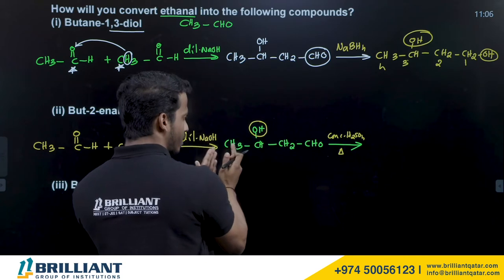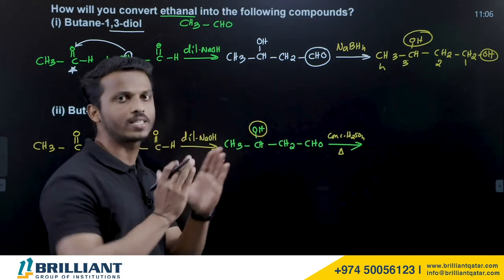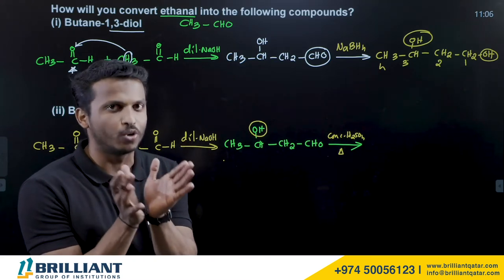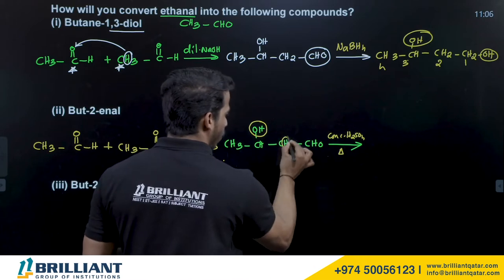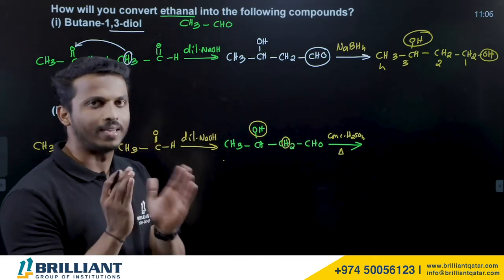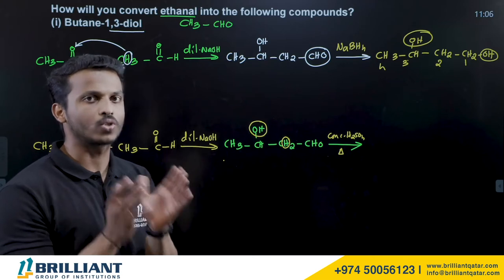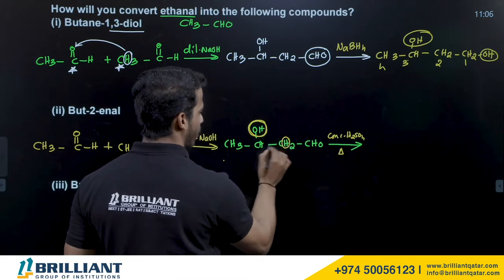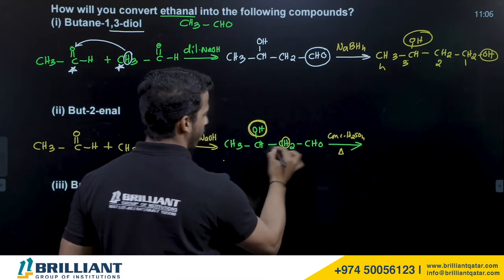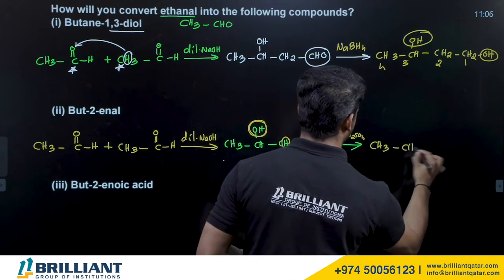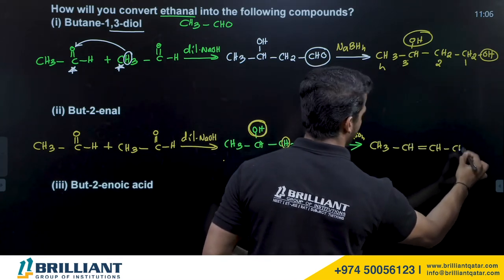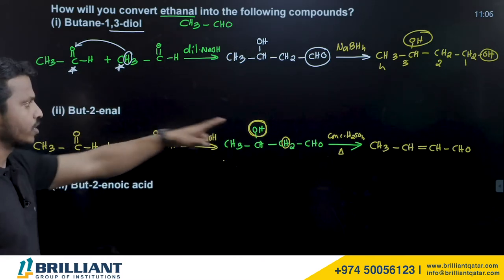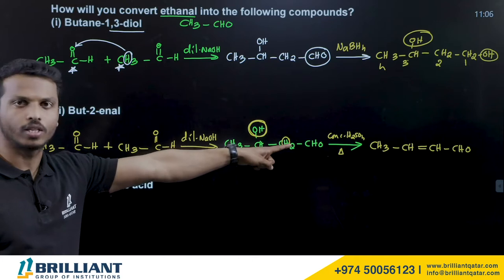During dehydration, alcohol loses water. According to Saytzeff's rule, we form the double bond in the more substituted area. Taking the OH and the hydrogen from the adjacent carbon makes a double bond, giving the product CH3–CH=CH–CHO — but-2-en-1-ol. Total four carbons confirmed.